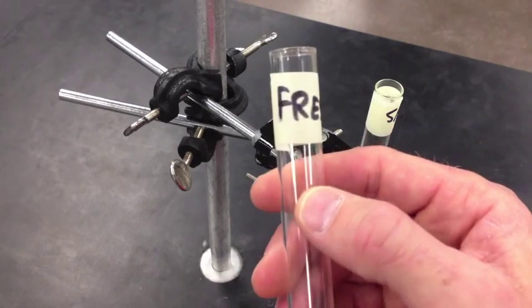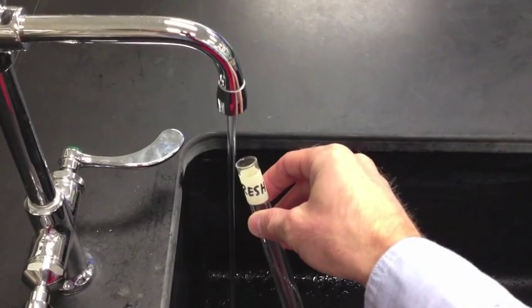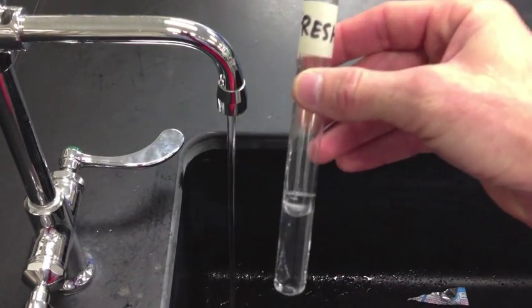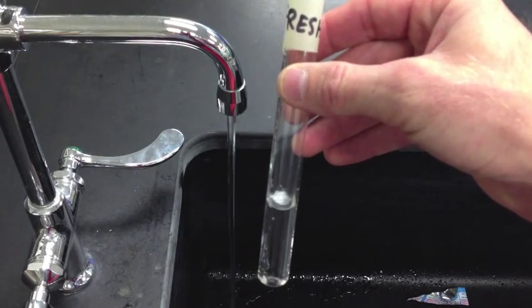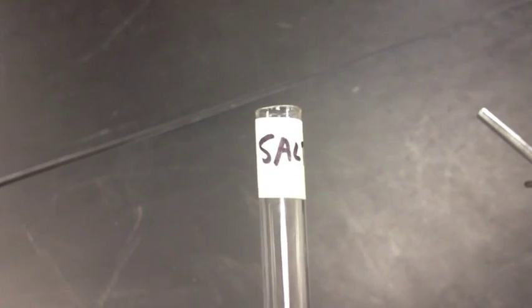To get the fresh water, go to the sink and fill it up. Fill up the test tube that says fresh water with about, I don't know, one and a half inches of fresh cold water. Dry off the test tube. Now, let's get some salt water.